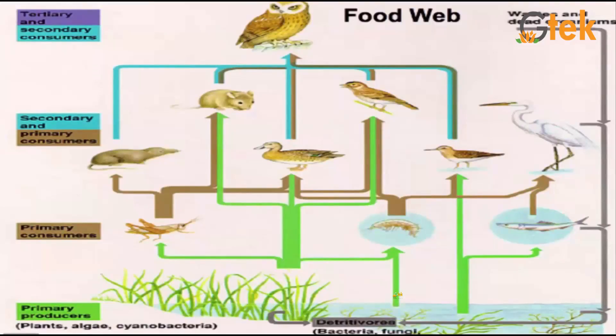Food web. You can see the food web here. It consists of primary and secondary consumers, and it starts with the producer.